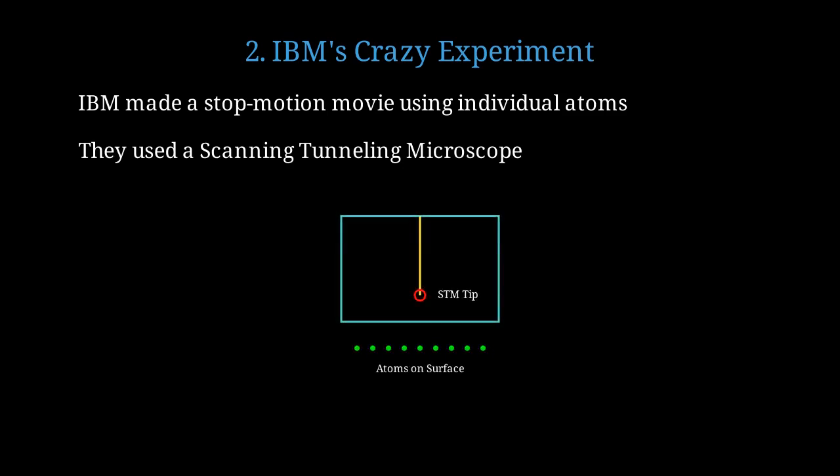The scanning tunneling microscope has an incredibly sharp tip that can pick up and move individual atoms like a tiny atomic claw machine. Here's a fun calculation.